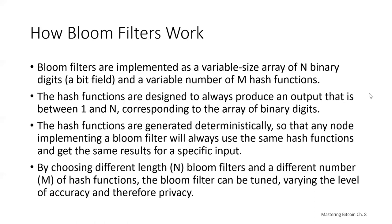Bloom filters are implemented as a variable-size array of binary digits — a bit field — and a variable number of hash functions. The hash functions are designed to always produce an output between 1 and N, corresponding to the array of binary digits. The hash functions are generated deterministically, so any node implementing a bloom filter will always use the same hash functions and get the same results for a specific input. By choosing different length bloom filters and a different number of hash functions, the bloom filter can be tuned varying the level of accuracy and privacy.